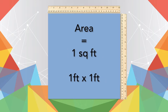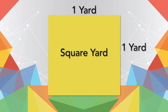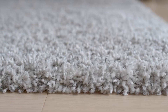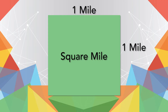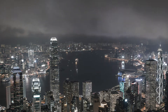In feet, one square foot equals one foot times one foot. Remember, we measure how much space we have on the inside of a figure. One square yard has a length and width of one yard, which is three feet. Square yards are sometimes used to measure the area of carpeting. A square mile is much bigger, with a length and width of one mile, or 5,280 feet. Square miles are used to measure the areas of large spaces like towns, cities, oceans, and lakes.